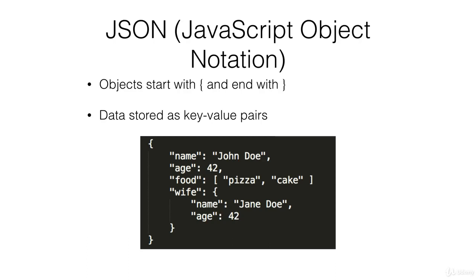Here's an example of an object. You can store strings, like John Doe, or you can store numbers, like 42, without quotation marks. And you can also store arrays — for example, this array of strings right here. You can also store objects within objects.